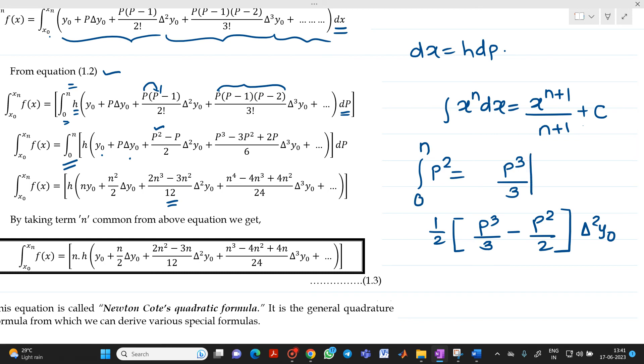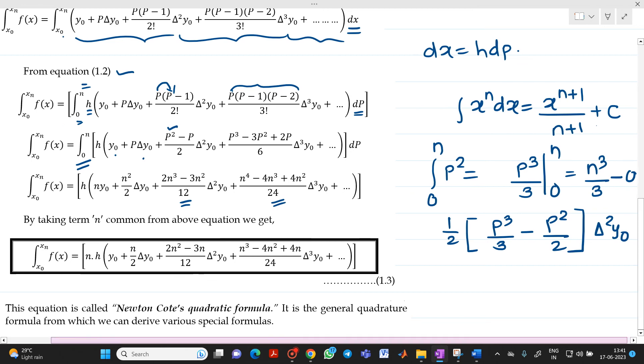we have to substitute upper limit as n. We will get n cube by 3 minus 0 because the lower limit is 0. Likewise, you will get 2n cube minus 3n square divided by 12 del square y0 plus n raise to 4 minus 4n cube plus 4n square divided by 24 delta cube of y0.